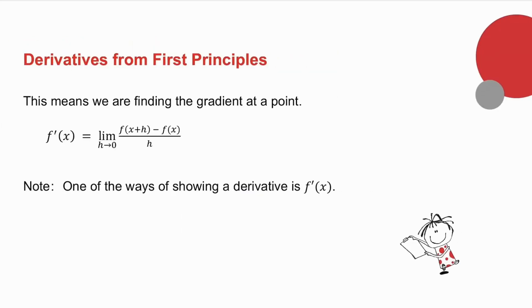Now if we talk about a derivative from first principles, a derivative is a gradient. From first principles means from the basic definition. So what we are trying to do is we're trying to find the gradient at a point. And the formula we used that we developed on the previous slide was that. Notice my notation for a derivative. I've used f'(x). That is one of the ways of showing a derivative.